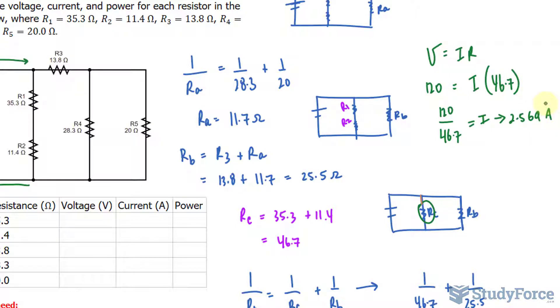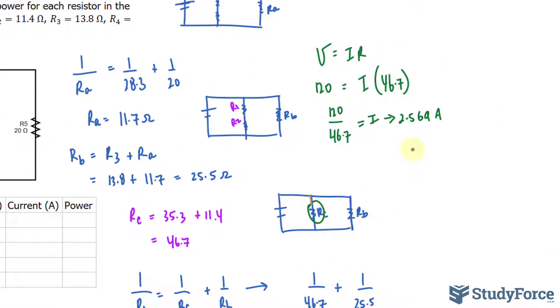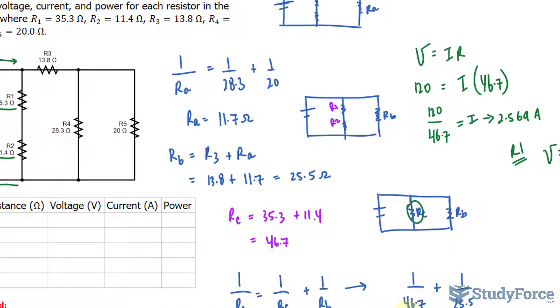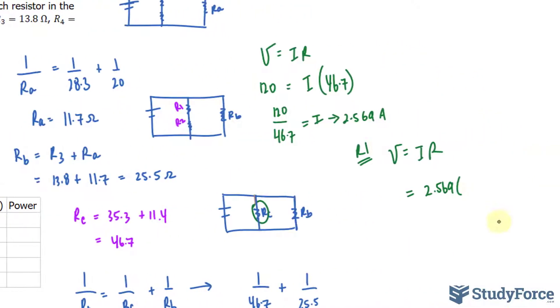Remember RC consists of R1 and R2. If we go back to R1 and R2, their resistance is provided. Looking at R1 specifically, we use Ohm's law. The current as we found for RC is 2.569. We'll multiply that by the resistance of R1 being 35.3.